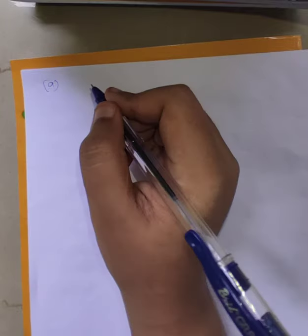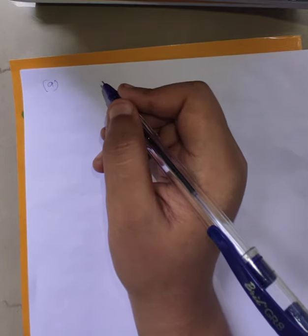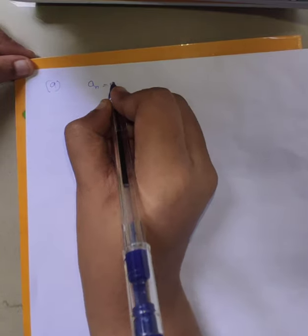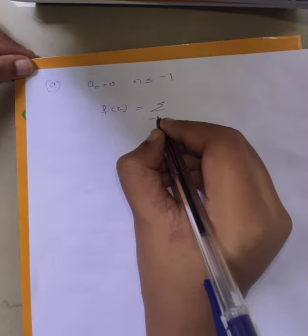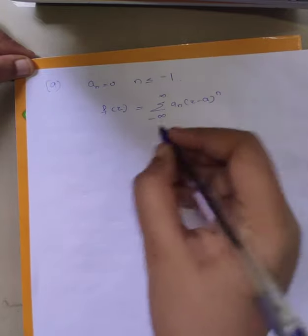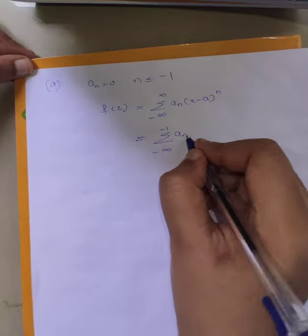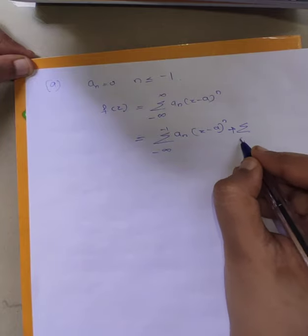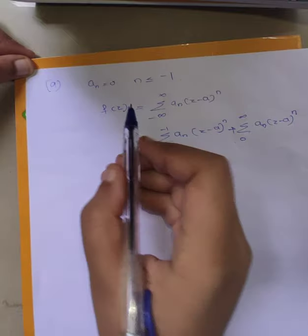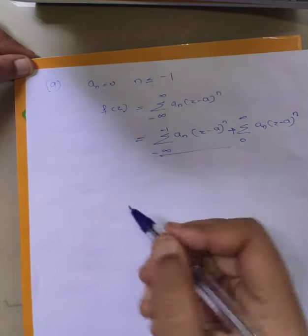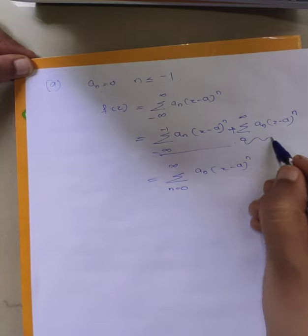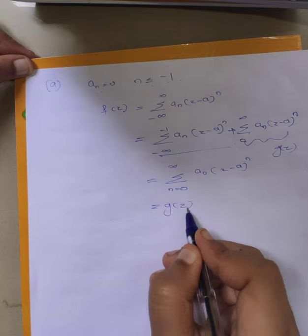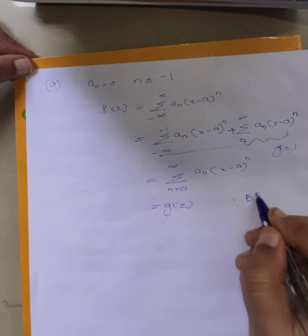To prove part (a), we need to show that z equal to a is a removable singularity if and only if a_n equals 0 for n less than or equal to minus 1. Suppose that a_n equals 0 for n less than or equal to minus 1. We have f(z) with Laurent series expansion: summation from minus infinity to infinity of a_n times (z minus a)^n, which we write as the sum from minus infinity to minus 1 plus the sum from 0 to infinity. Since a_n equals 0 for negative n, we call the remaining term g(z), so f(z) equals g(z), where g(z) is analytic in B(a, r).